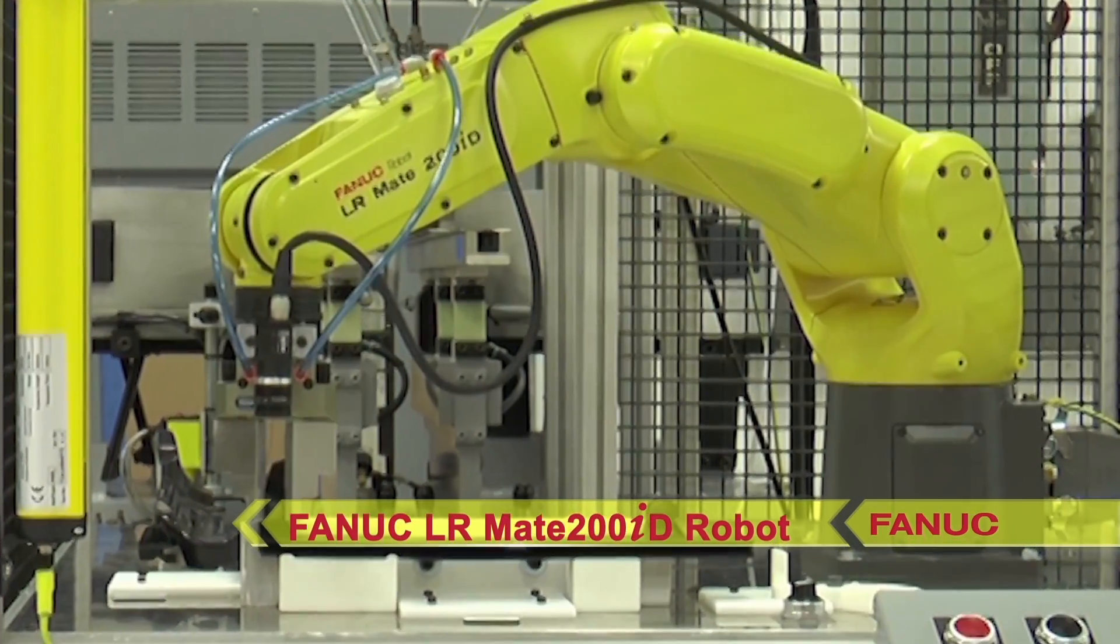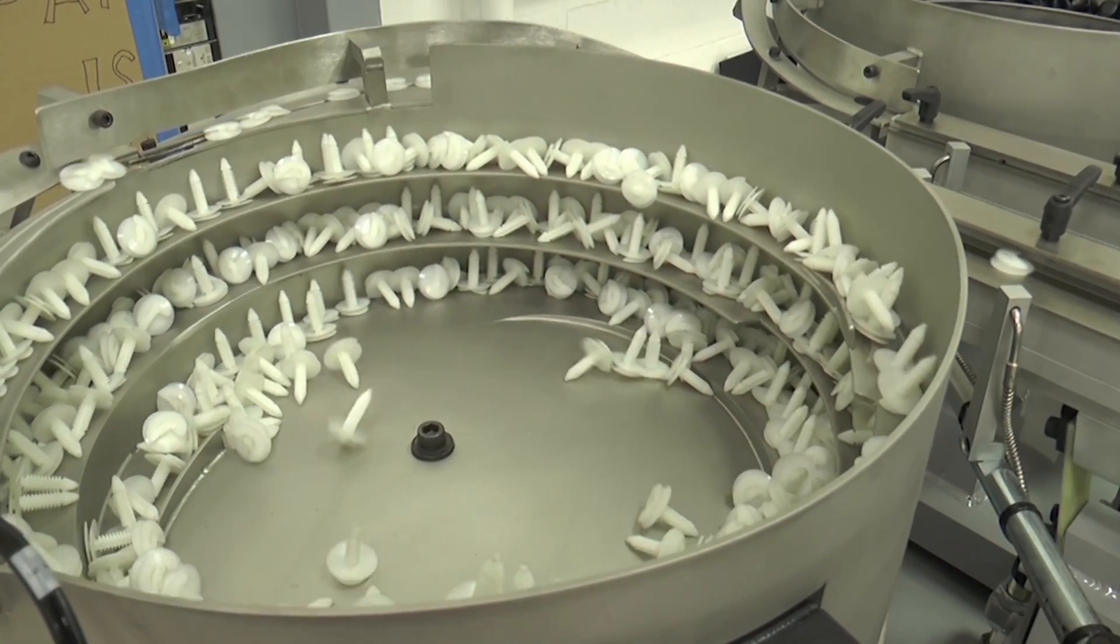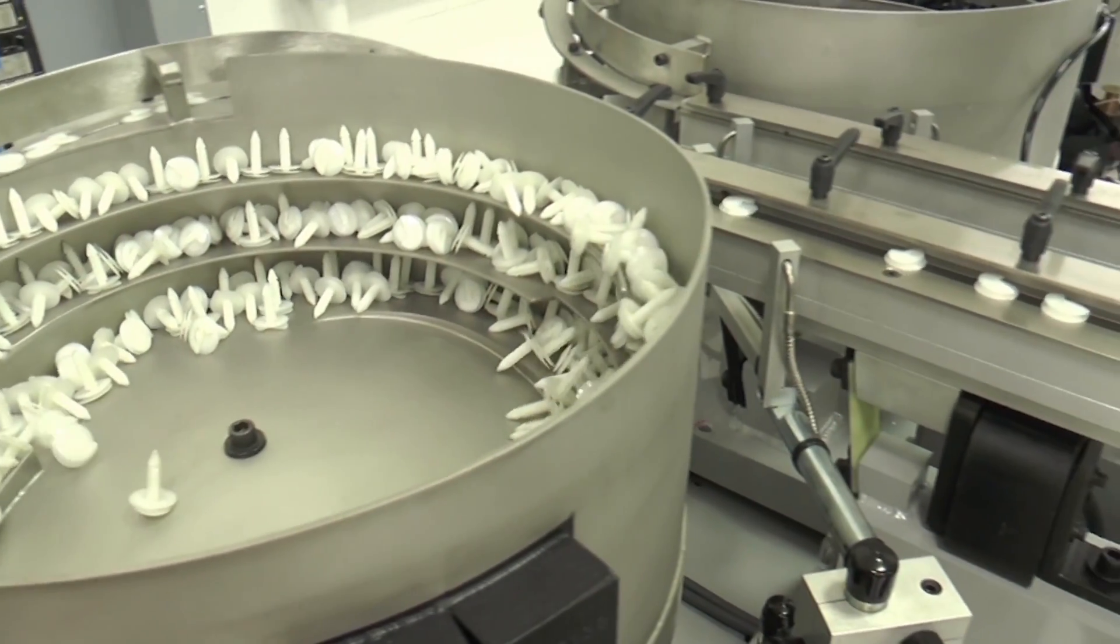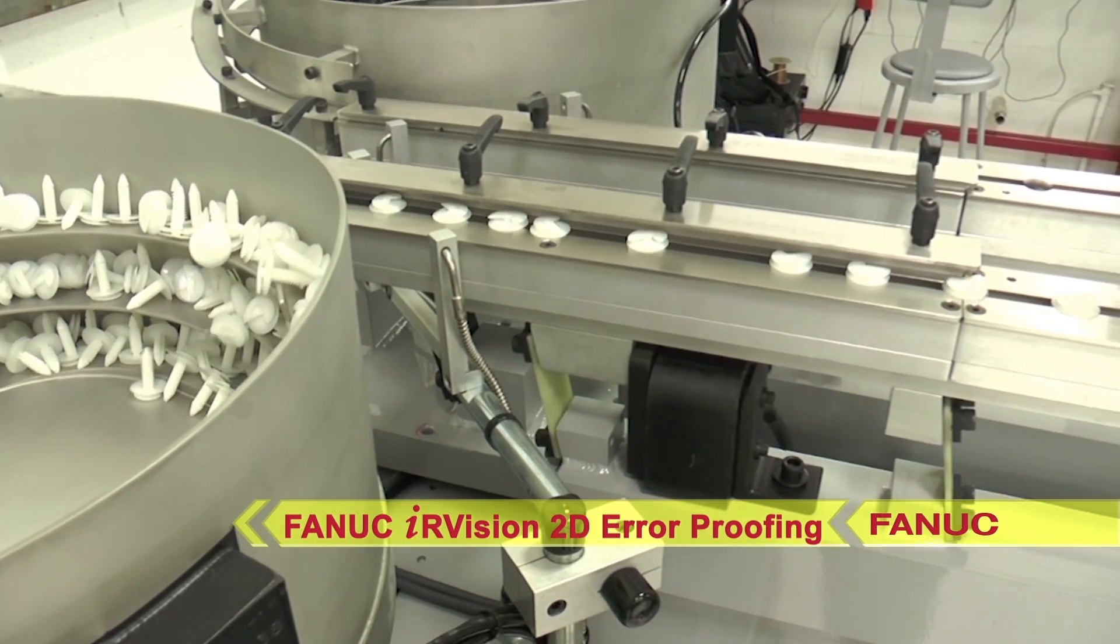The system process starts with an inspection of a plastic injection molded part using FANUC IR Vision 2D error proofing. After inspection, the tabs move down a parts feeder.